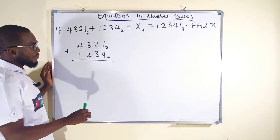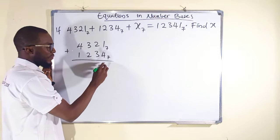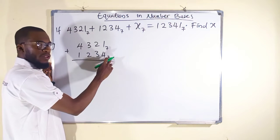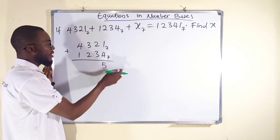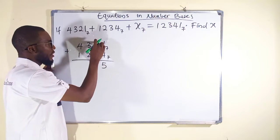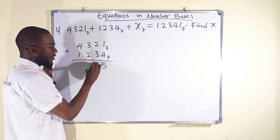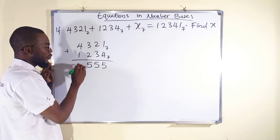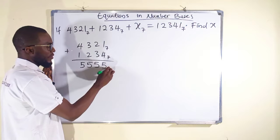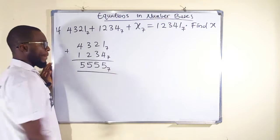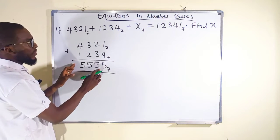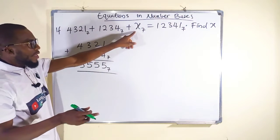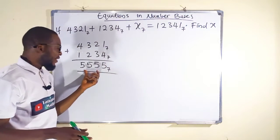Adding the two known numbers together: 1 plus 4 is 5; since 5 is less than the base 7, we keep it. 2 plus 3 is 5, 3 plus 2 is 5, 4 plus 1 is 5. So the result of adding those two numbers together is 5555 in base 7.